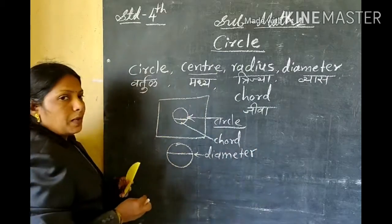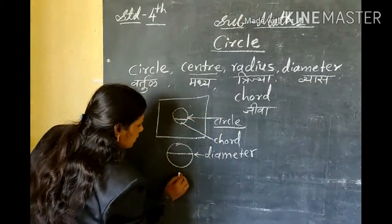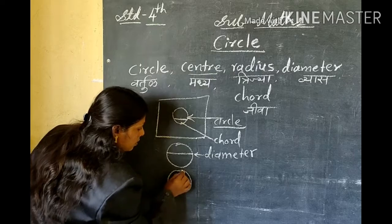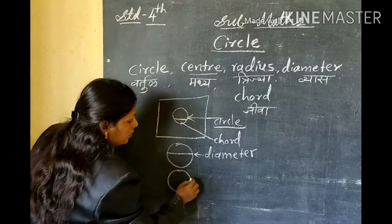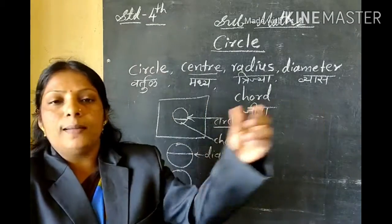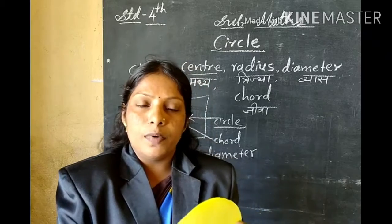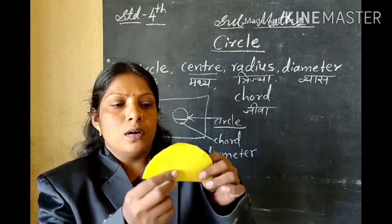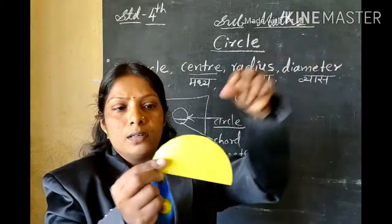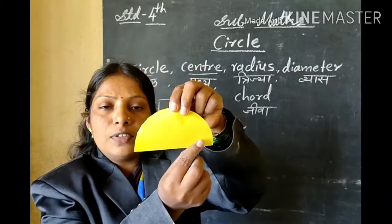The next part is the center — the center of the circle. Take another circular shape and fold it in the middle to make two halves, then take another fold.